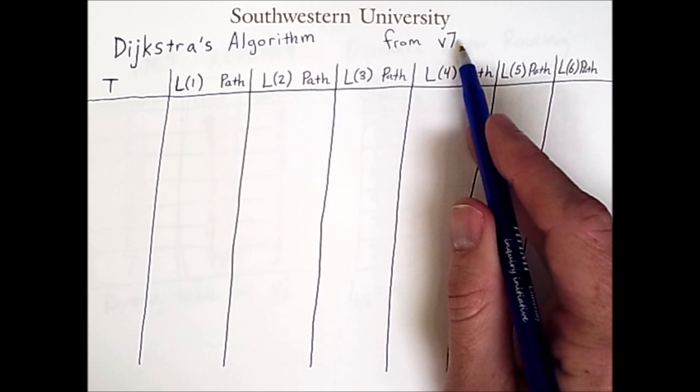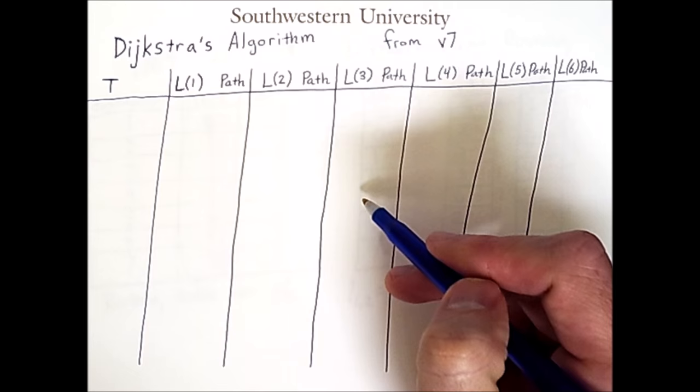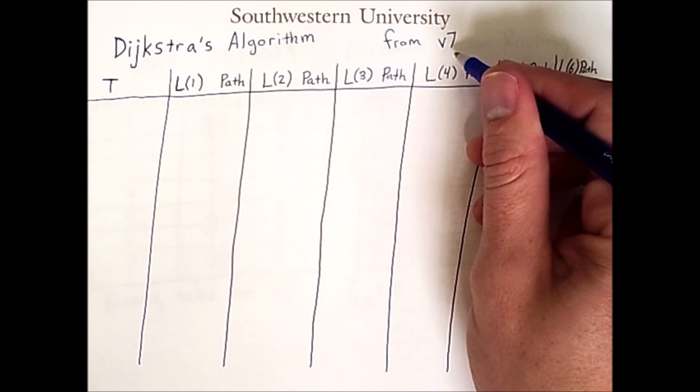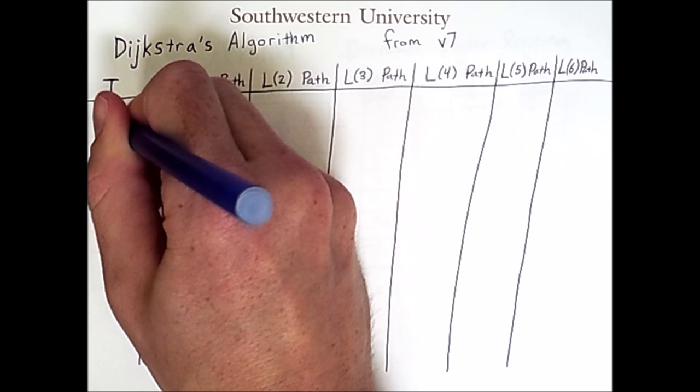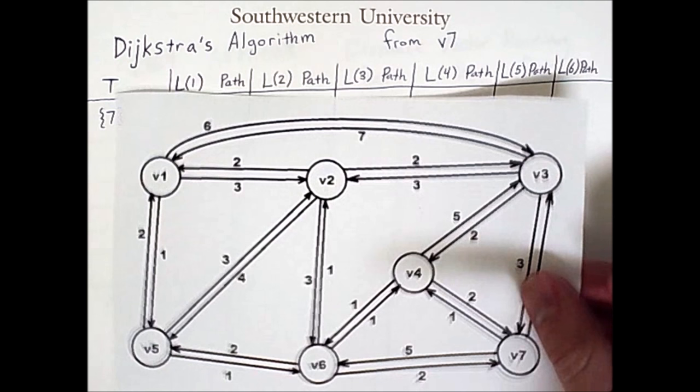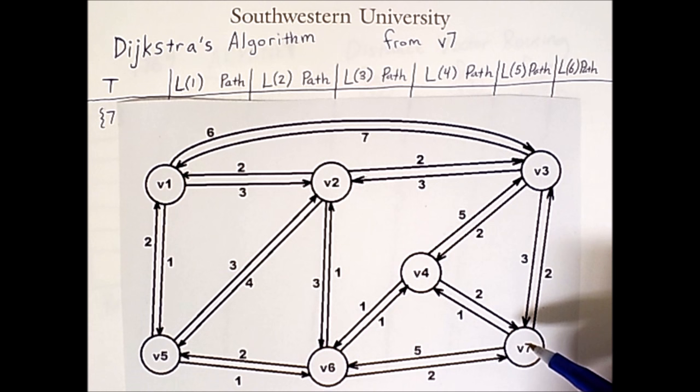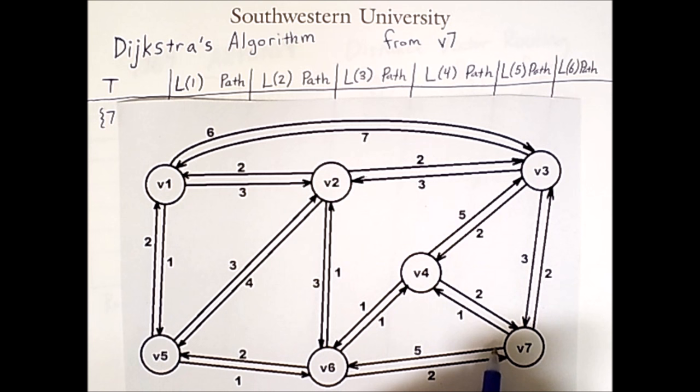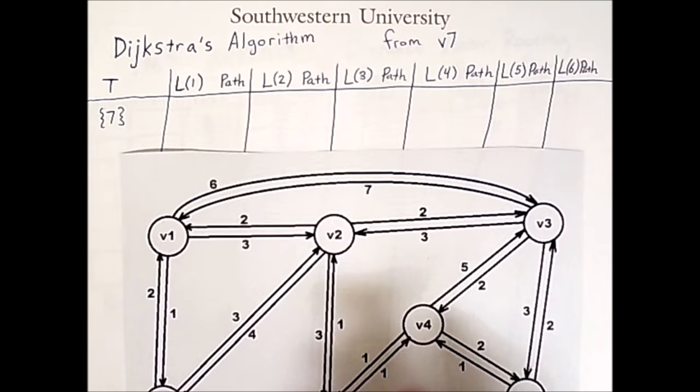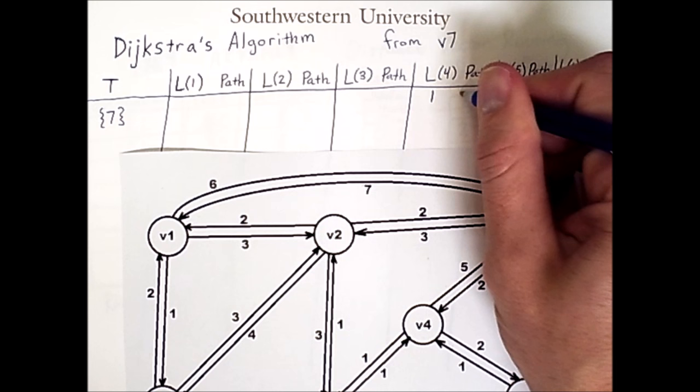Because we are starting from vertex 7, the first vertex in our set is 7. And what we do is look at this network and figure out how many nodes are one step away from vertex 7. From vertex 7, we can reach V4 with a single hop, and the cost of that hop is 1. So under V4, the length of the path will be 1, and the path itself will be 7 going to 4.